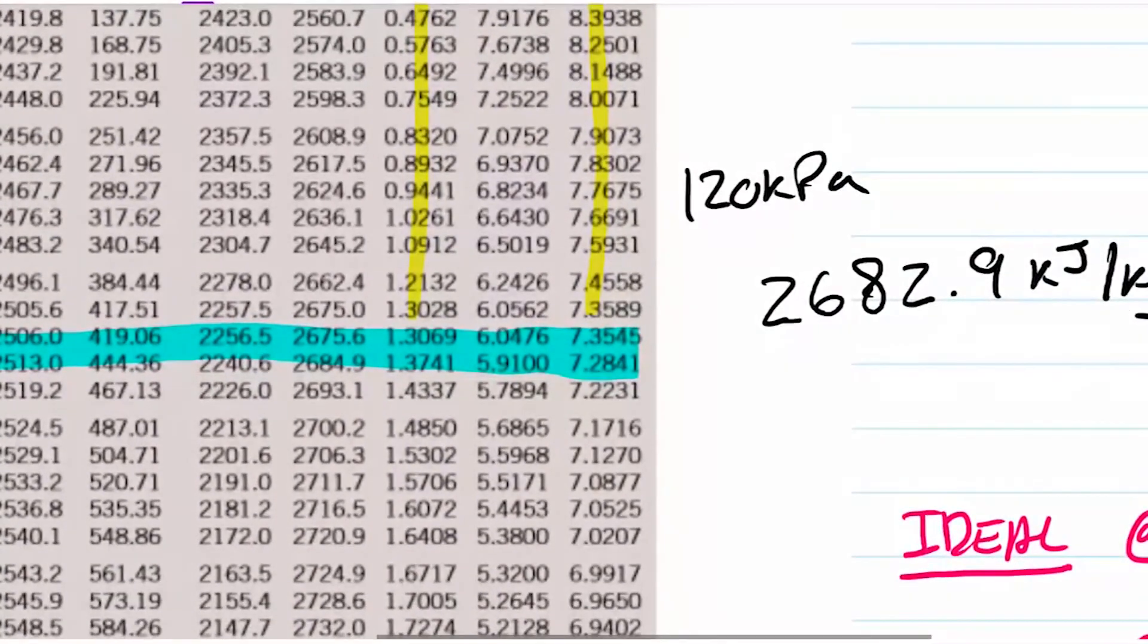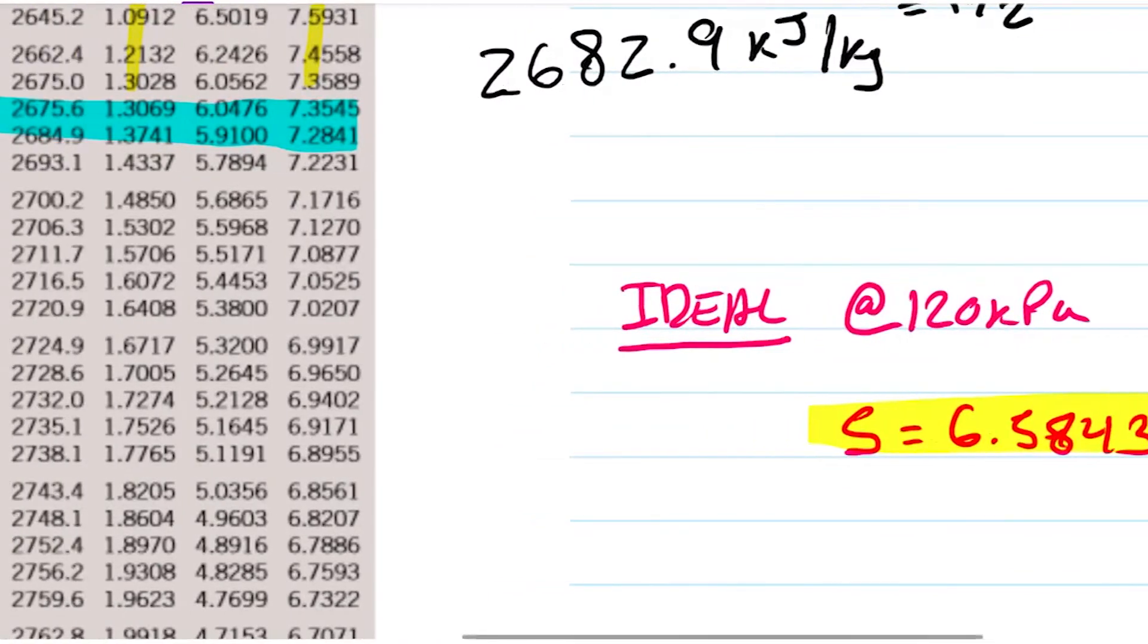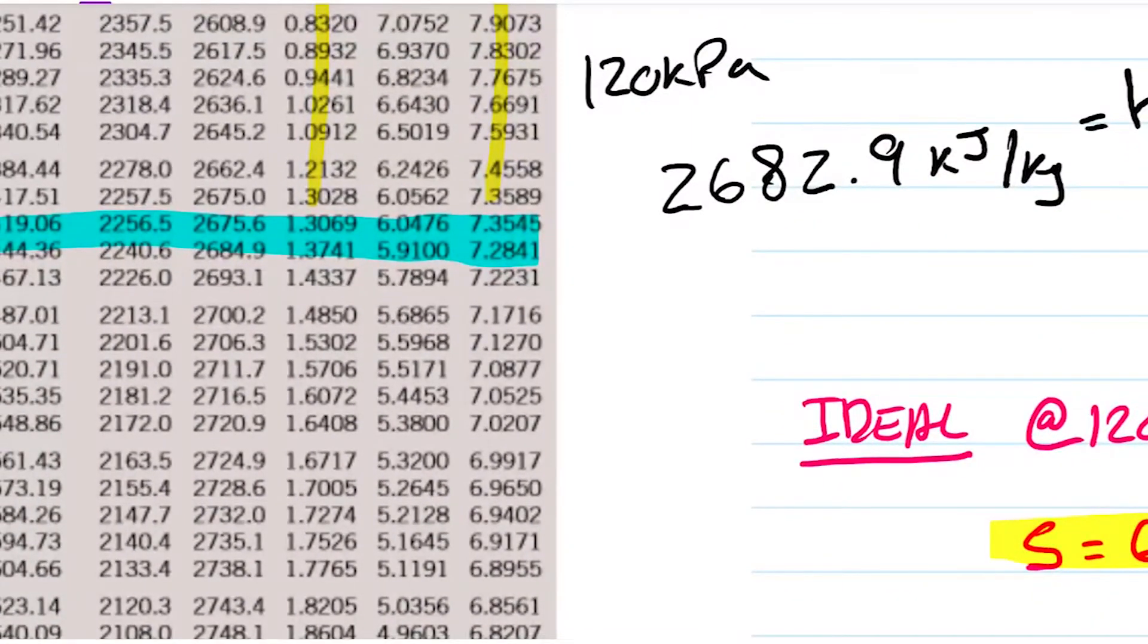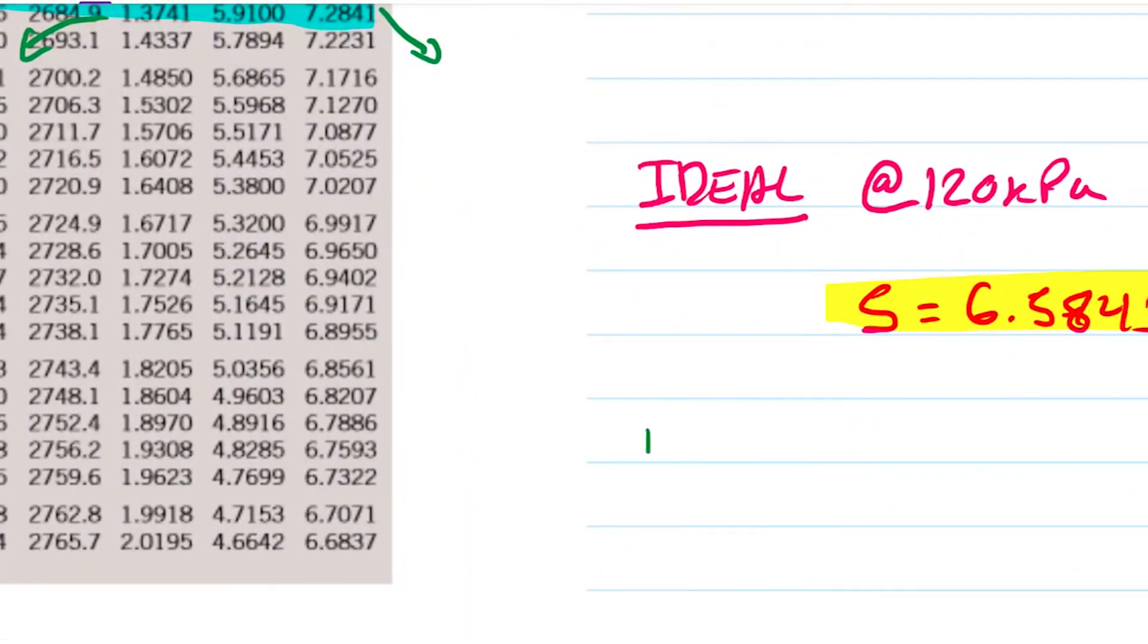And I want to see is that entropy value, this 6.5 guy, is it between these two? Is it greater than the bigger one? Is it smaller than the smallest one? Or is it between? Well it's between. It's 6, and 6 is greater than 1.3 and smaller than 7. So therefore I can conclude my ideal case is a saturated mixture.